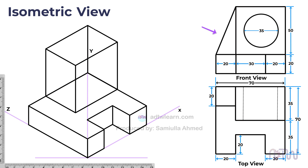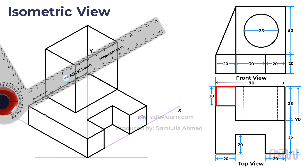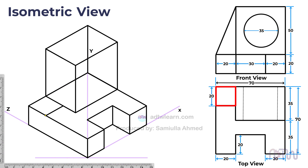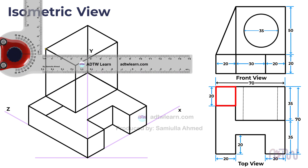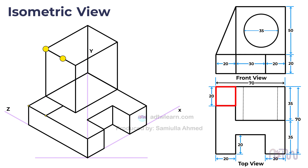Moving on, we need to draw the inclined portion of the object. In the top view, the base of this portion is square. From the given isometric view, the width of this square is 20 millimeters. Mark a distance of 20 millimeters from this corner point along this line using a drafter and construct the square. This square represents the base of the inclined portion. Next, mark a distance of 20 millimeters along the z-axis from this corner point, then join these two points of the square with the top points to complete the inclined portion in the isometric view.